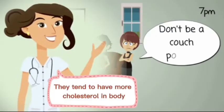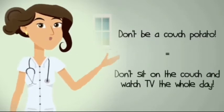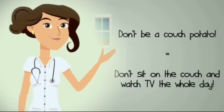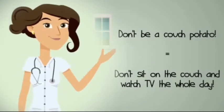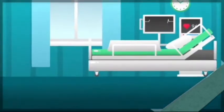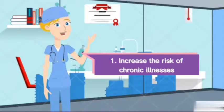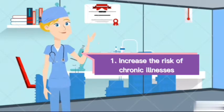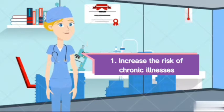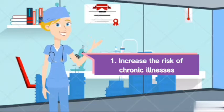Thus, they tend to have more cholesterol. This excessive cholesterol might build up on the walls of the arteries, causing them to become narrower than usual. When the arteries become narrow, it will cause an increase in blood pressure. The effect of being a couch potato includes an increased risk of obesity and more than 30 other chronic illnesses. Inactivity has also been found to increase markers of heart disease, and this activity imbalance can cancel out many of the positive effects of exercising, such as blood sugar control and better blood flow to the legs and brain.